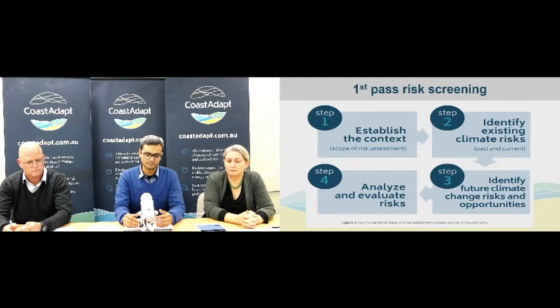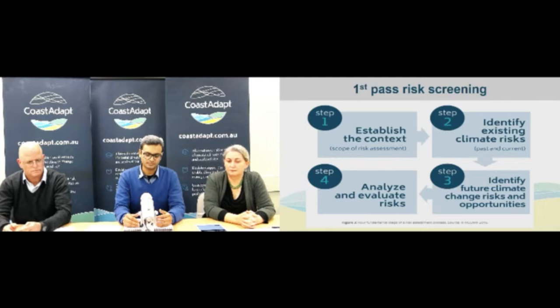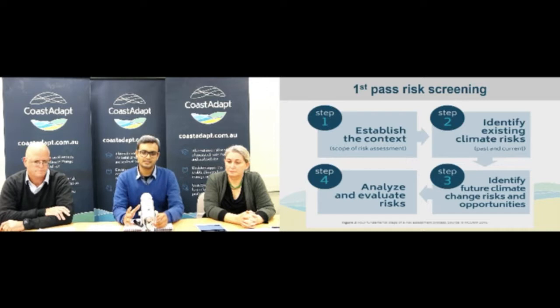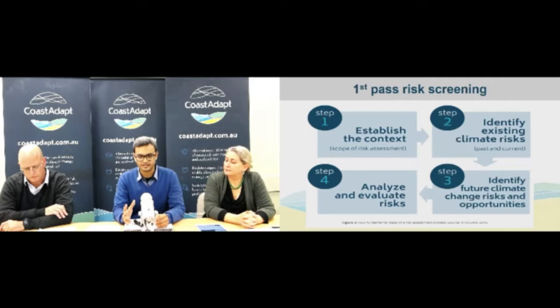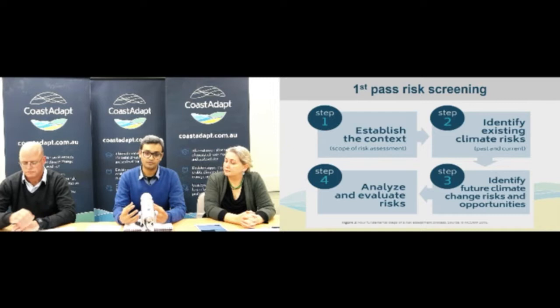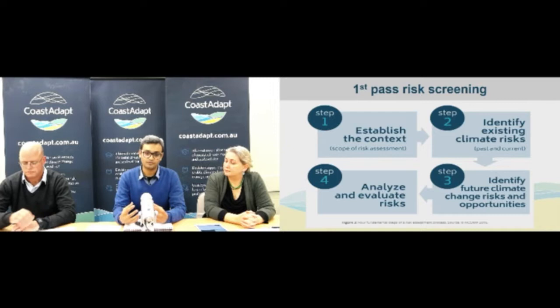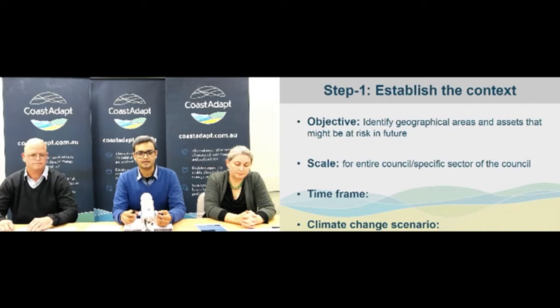Today we won't have time to go through all three levels of risk assessment. I'll just give you an overview of fast pass risk screening and a quick summary of second pass towards the end. In fast pass risk screening, as you can see, there are four fundamental steps, which are quite similar to the ISO 31000 risk management process. Step one: scope your assessment. Step two: identify your existing risk. Step three: identify your future climate change related risk. Step four: evaluate those risks and come up with a strategy.